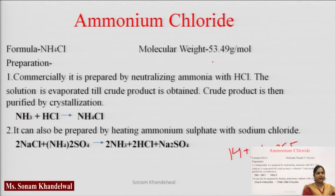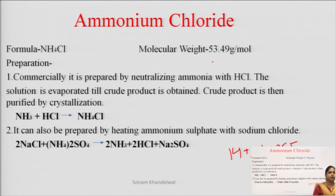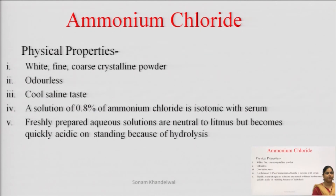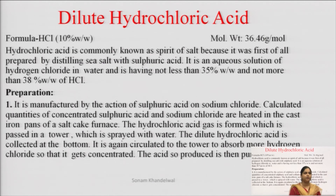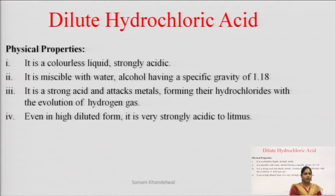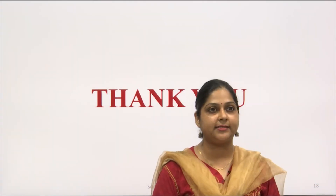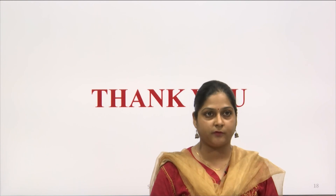Iske baad humane padhe the two compounds: ek toh ammonium chloride hai, aur ek humane pada HCl — basically these are both of the compounds jo ki hamare syllabus mein mentioned hain. So practice it using your books and other reading material. Thank you. In the next lectures, I will be discussing the other topics of the same unit.